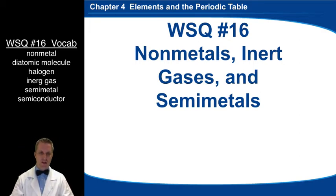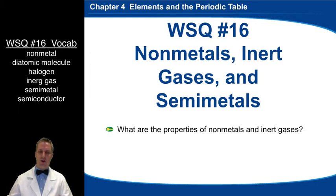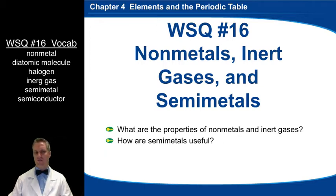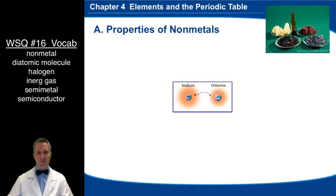Welcome to WSQ number 16. Today we're going to talk about non-metals, inert gases, and semi-metals. This is just an introduction to take a look at how these things fit together, how these elements on the periodic table differ from the metals that we discussed in WSQ 15. A couple objectives: what are the properties of non-metals and inert gases, and how are semi-metals useful. This is just a general overview, shouldn't take us very long.